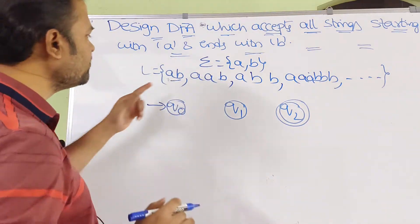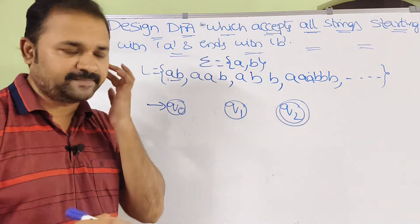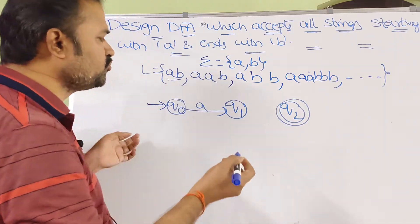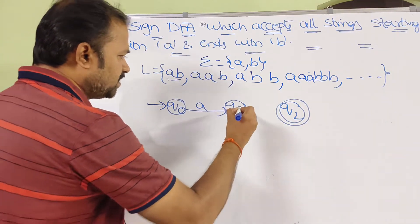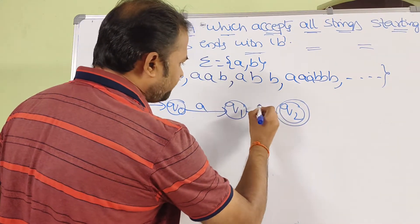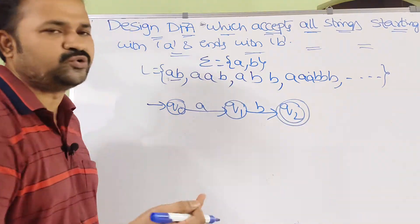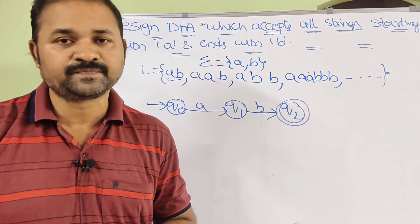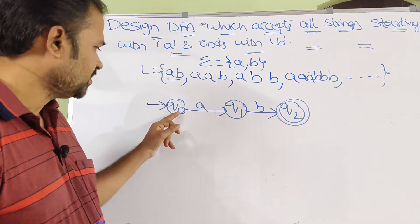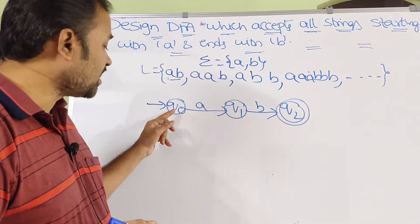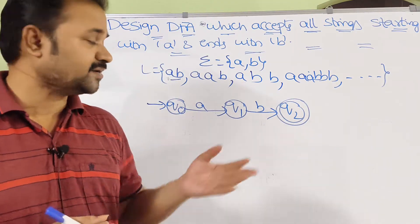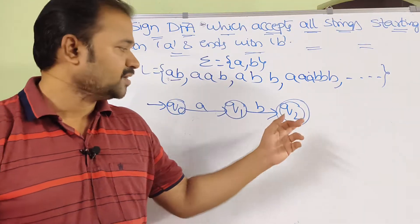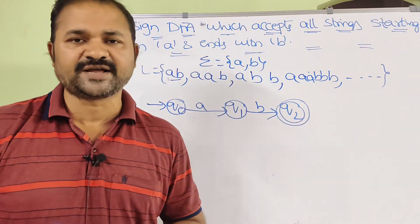The minimum string is A, B. So on Q0 if we apply A we go to Q1. On Q1 if we apply B we go to Q2. But this is not yet a complete DFA, because on Q0, B is not applied; on Q1, A is not applied; and on Q2, A and B are not applied.